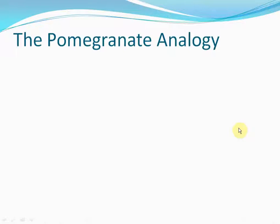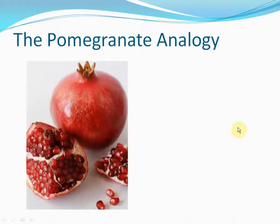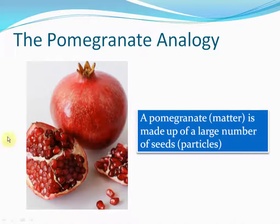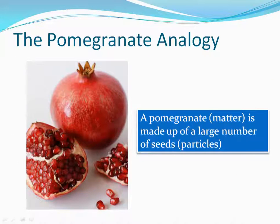You can consider matter to be similar to a pomegranate. Here's a pomegranate on your screen. A pomegranate appears to be a rigid mass, but it actually consists of a lot of seeds. Here are the pomegranate seeds. The point is that all matter, though it seems to consist of a rigid mass, similarly consists of a lot of particles. Just like a pomegranate contains a lot of seeds, matter contains a lot of small particles. That was the pomegranate analogy.